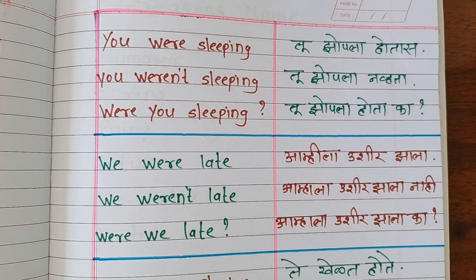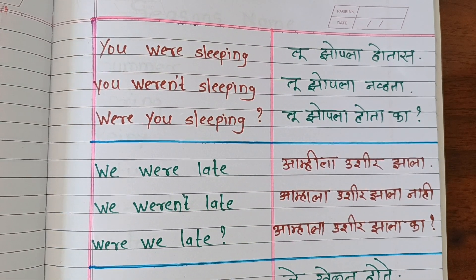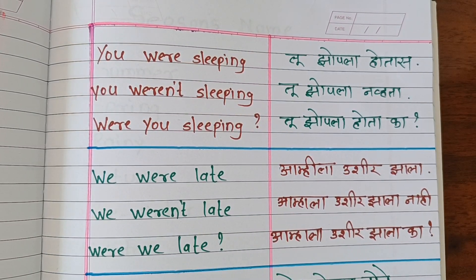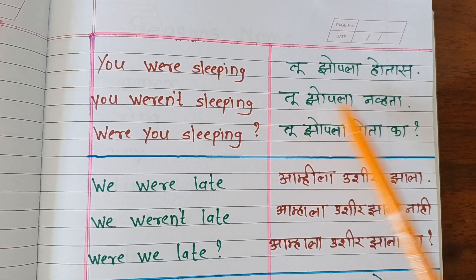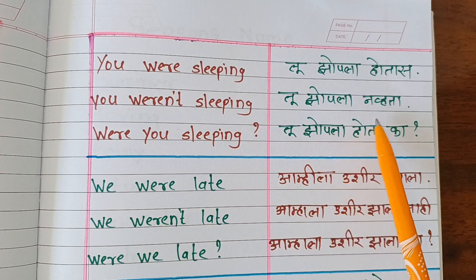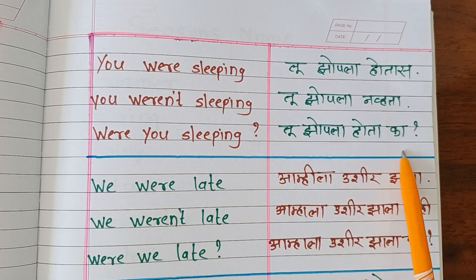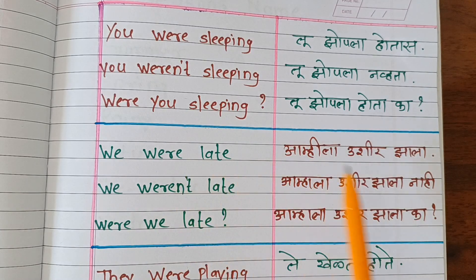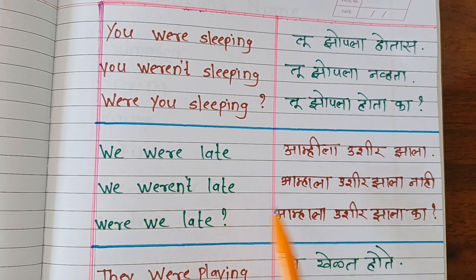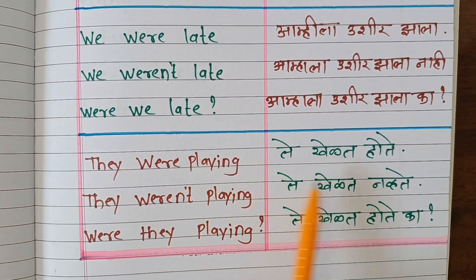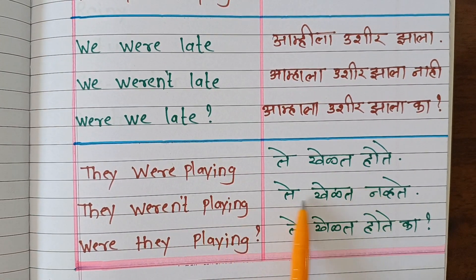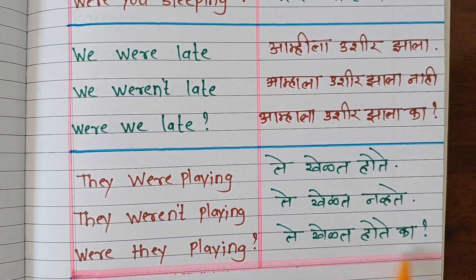Now for you, we, and they — we use 'were'. You were sleeping. You weren't sleeping. Were you sleeping? We were late. We weren't late. Were we late? I was sleeping. They were playing. They weren't playing. Were they playing?